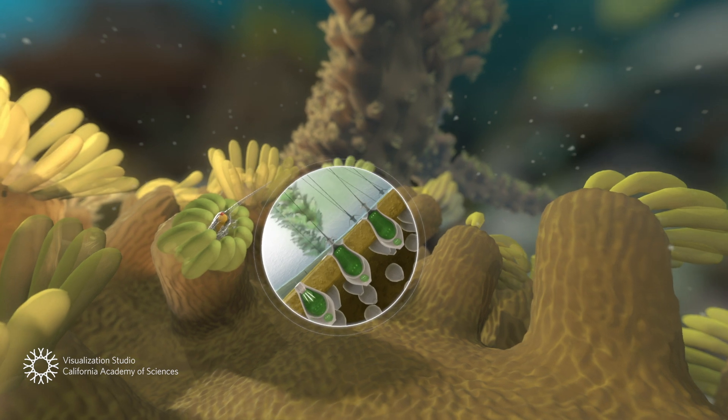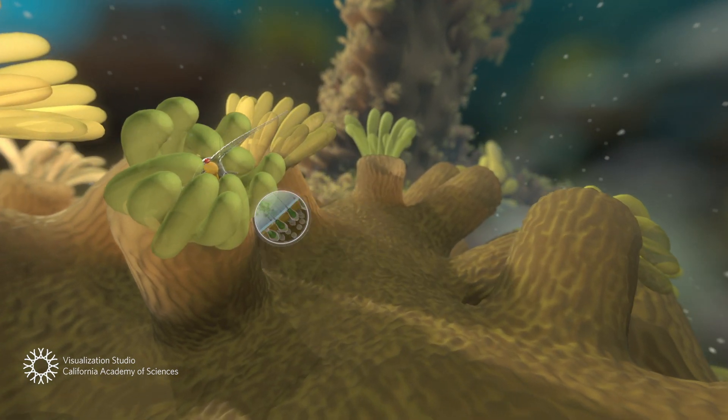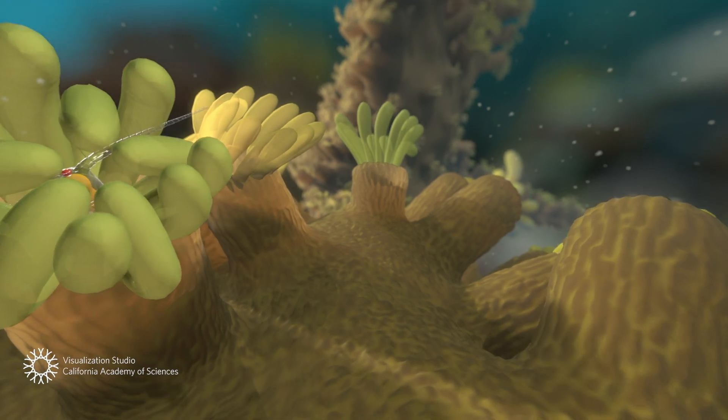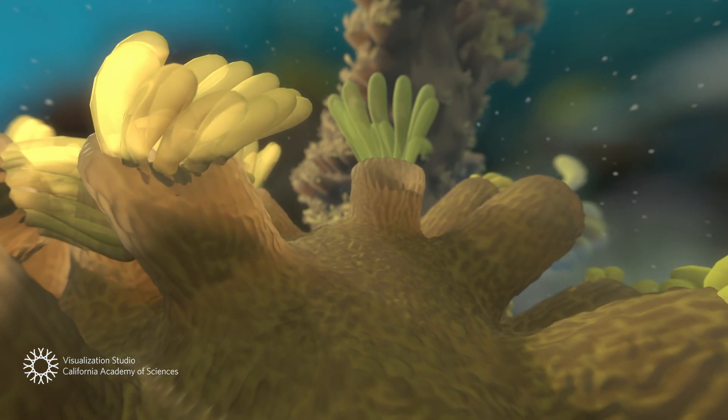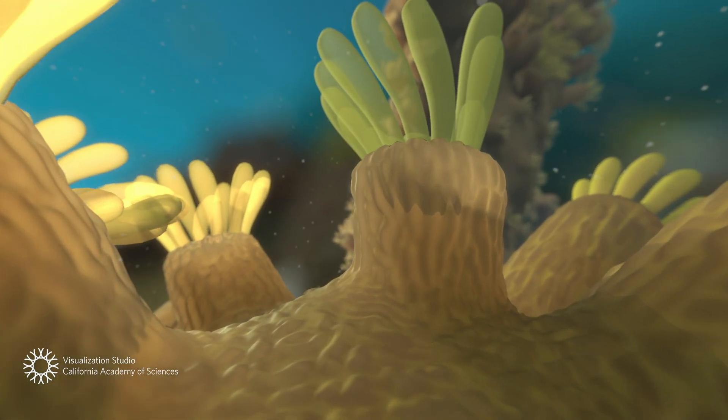The polyp then draws the copepod into its mouth to digest. These meals provide an important source of energy. But most of the coral's energy comes from someplace very different.